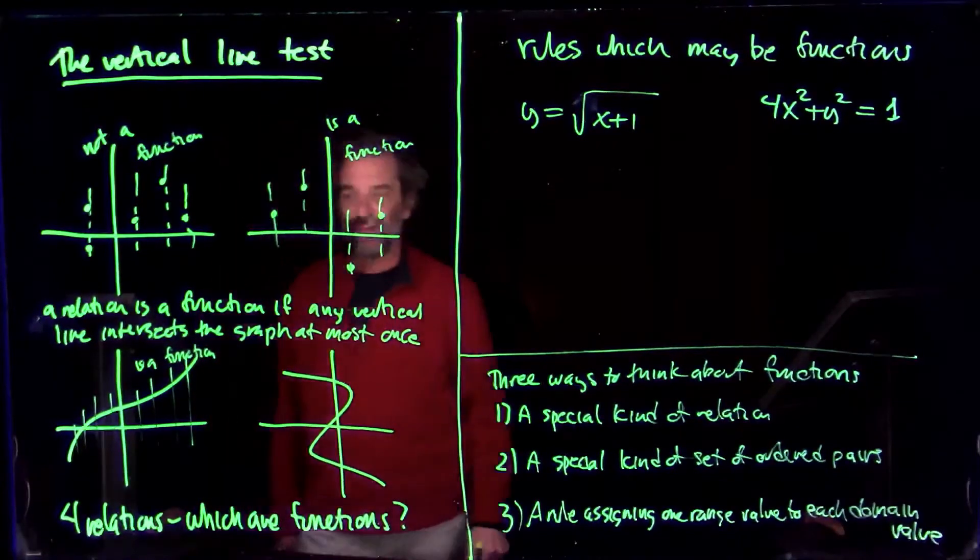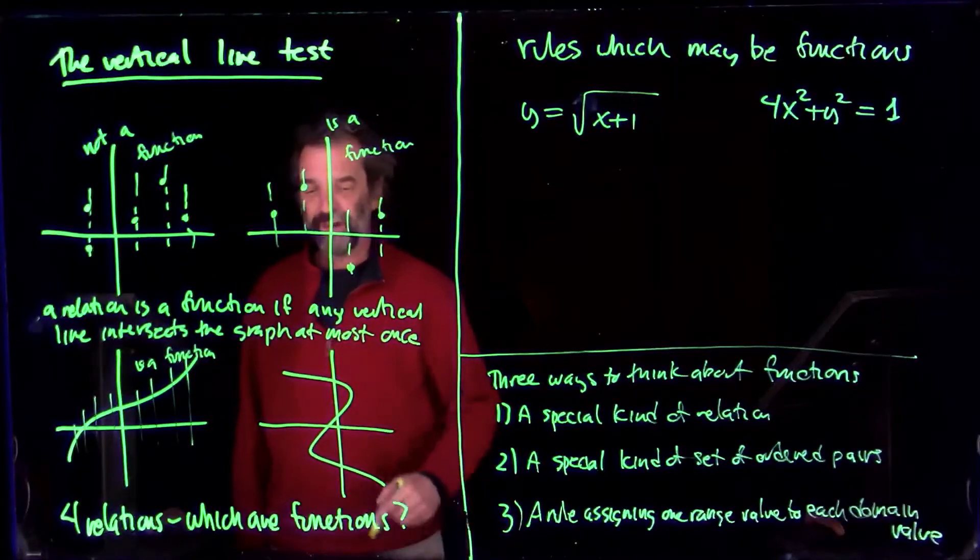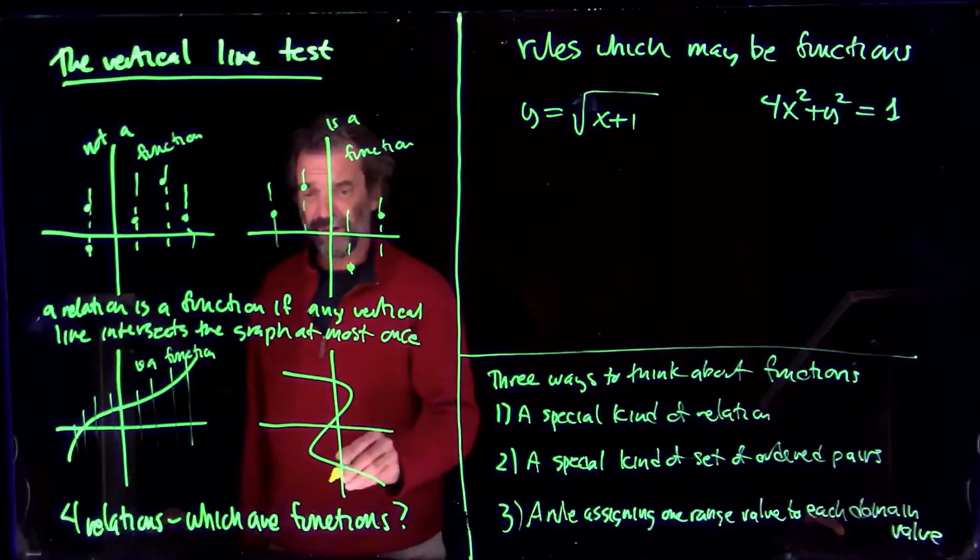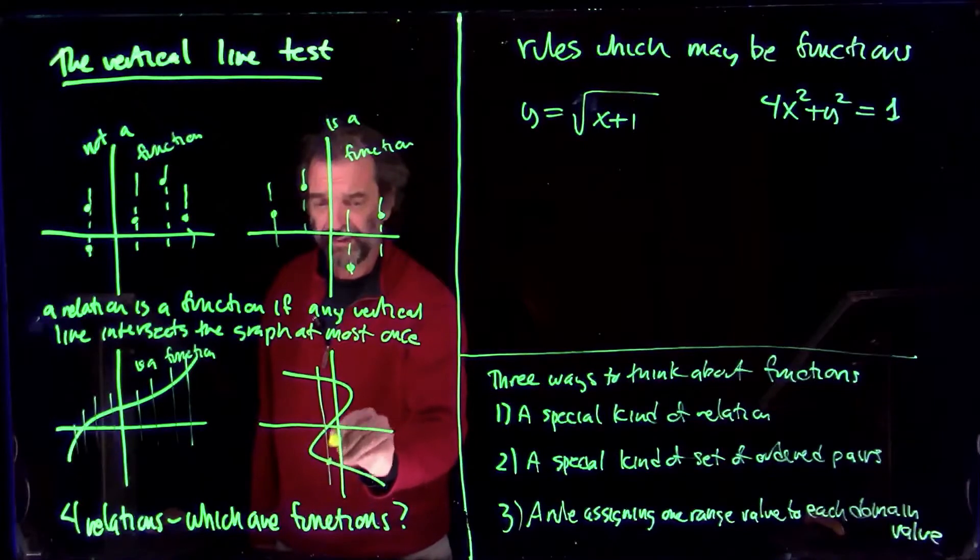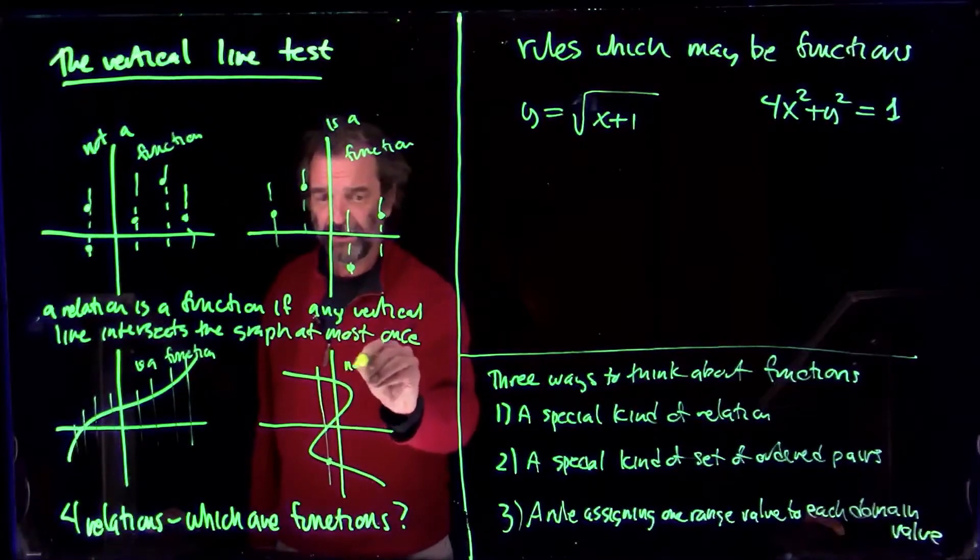If there's just one place where a vertical line intersects the graph more than once, the graph isn't the graph of a function. This one has lots of problems. Here you can vertically intersect the graph three times. Not a function.